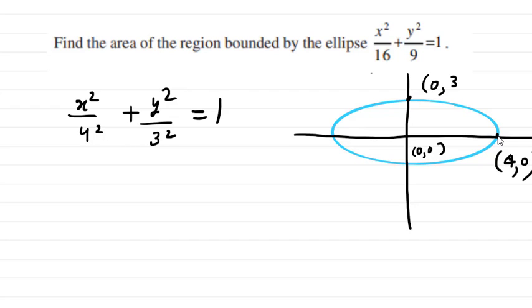Here this point will be (0,3), and here it will be (-4,0). We don't need all these coordinates.